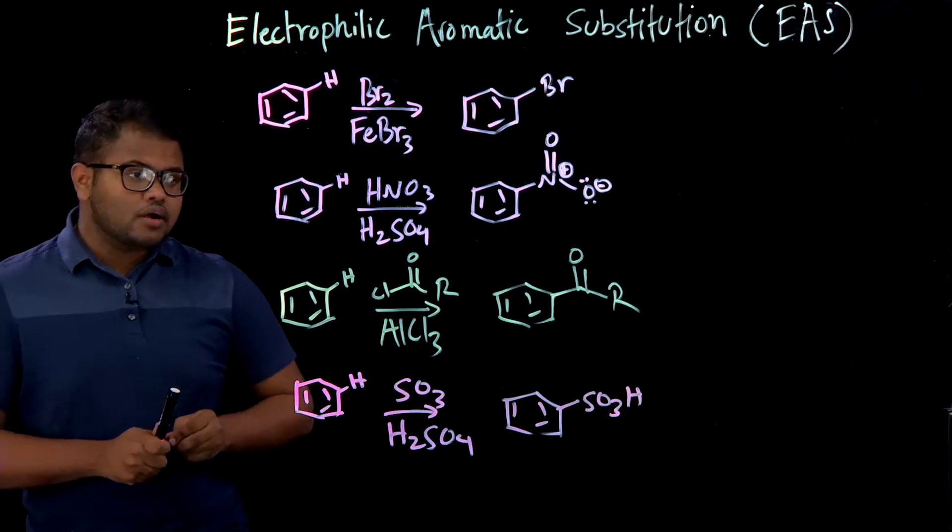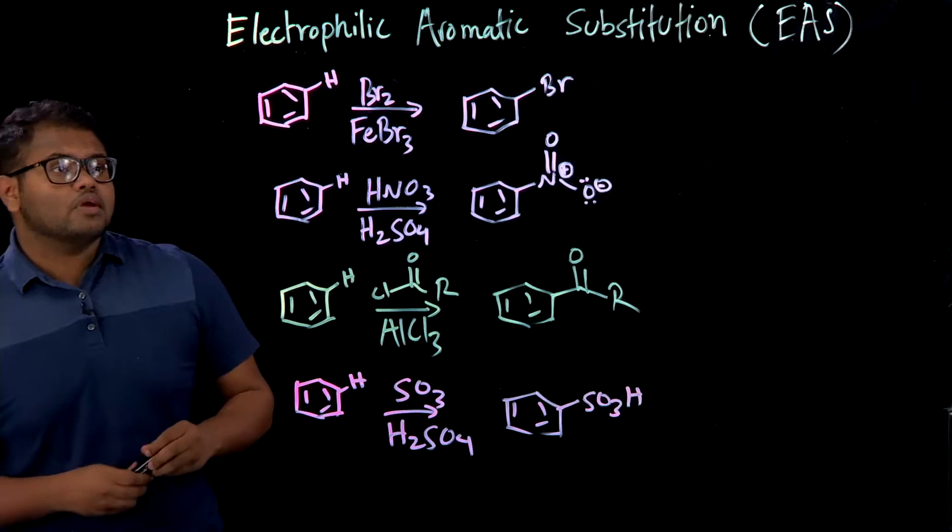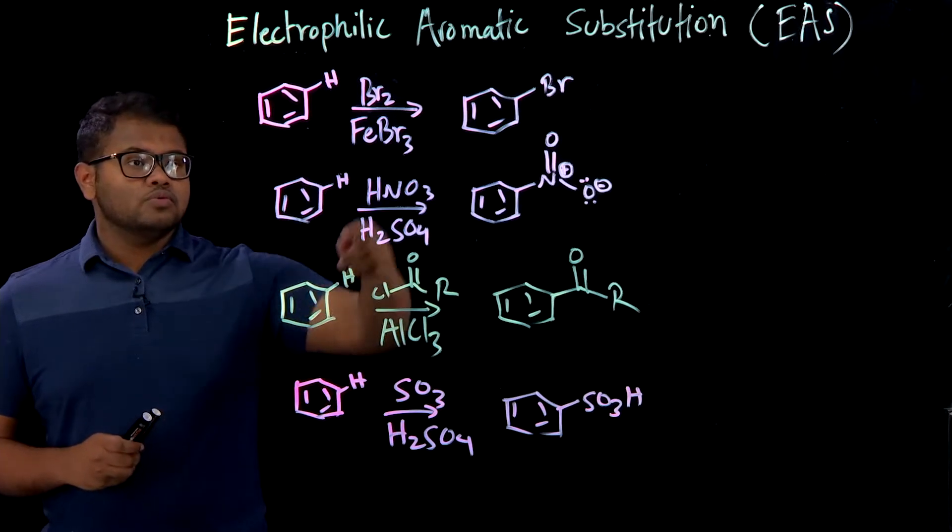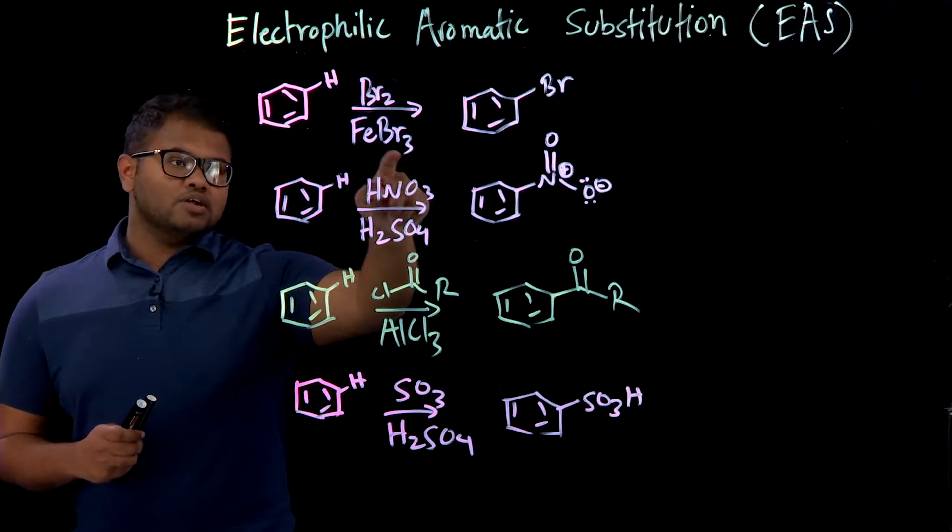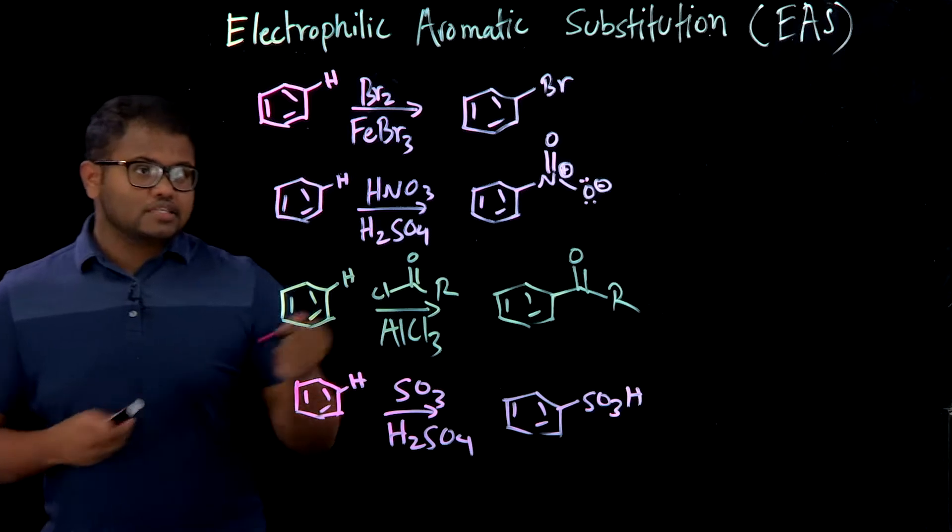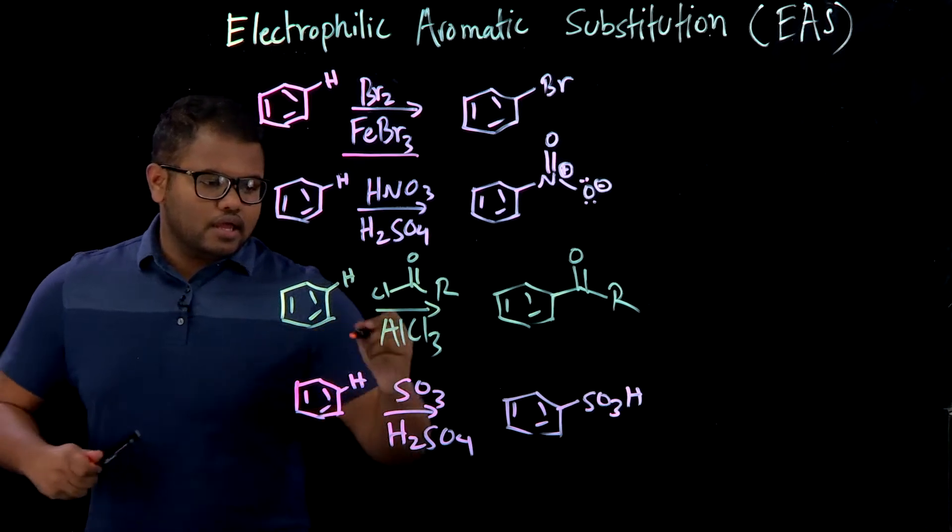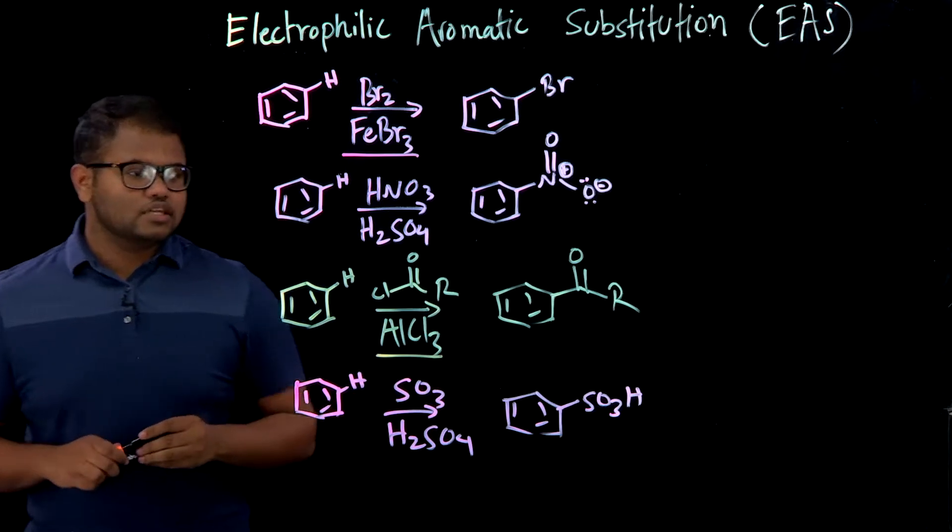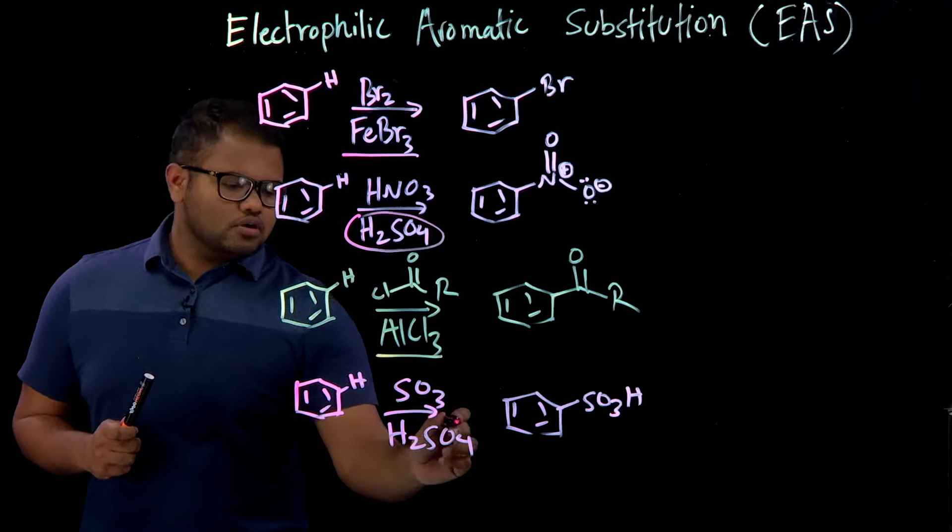So as you can see, these will be very common in 8b and some patterns include you need a reagent with the presence of either a Lewis acid or regular acid. So the most common Lewis acid you're going to see is FeBr3 and AlCl3, these are the Lewis acids. And H2SO4, the sulfuric acid, is also one of the more common ones.